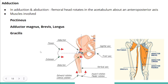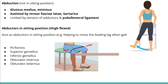Adduction and abduction occur as the femoral head rotates in the acetabulum about an anterior-posterior axis. Muscles for adduction include pectineus, the adductors of the thigh — adductor magnus, adductor brevis, and adductor longus — and also gracilis. For abduction in the standing position, the muscles involved are gluteus medius and minimus, assisted by tensor fasciae latae and sartorius. Abduction in standing is limited by the tension of the adductors and the iliofemoral ligament.